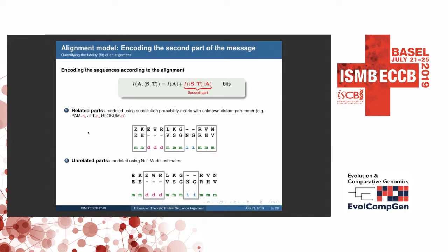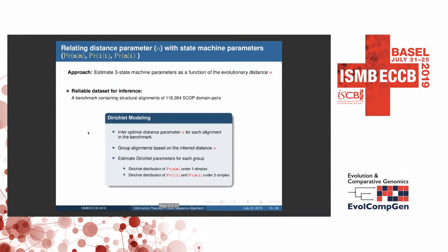And then the second part of the messaging was sending the sequence data. So for that, we take the related parts and unrelated parts. For related part encoding, we can use a probability substitution matrix like PAM, BLOSUM, or JTT. But there is an unknown parameter associated, which is the evolutionary distance N between them. So we have to actually infer that as well. And for unrelated parts, we can simply use the null probabilities that we use for the null model.